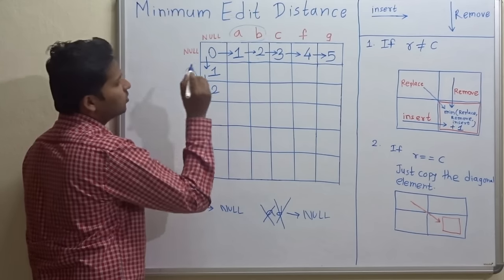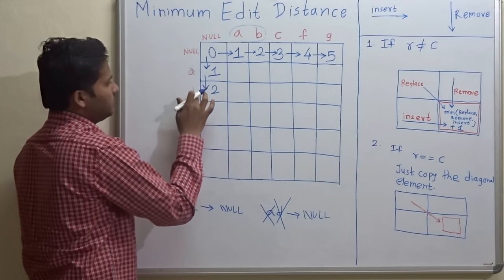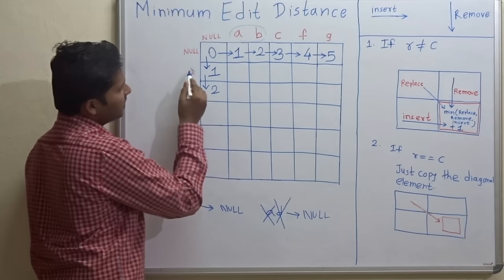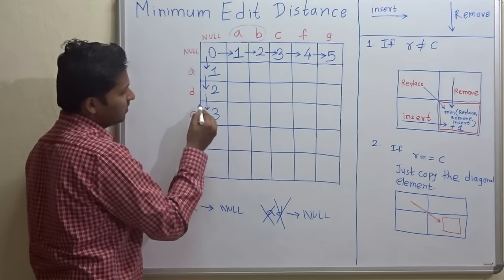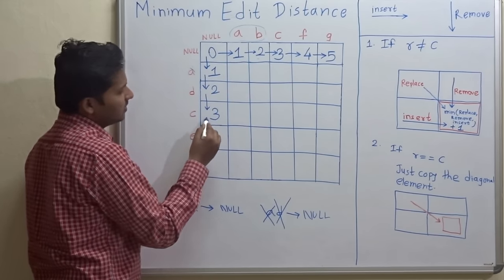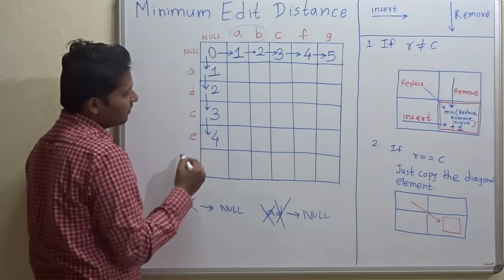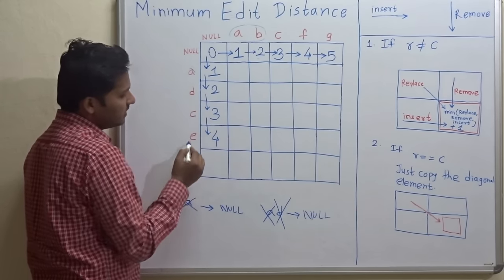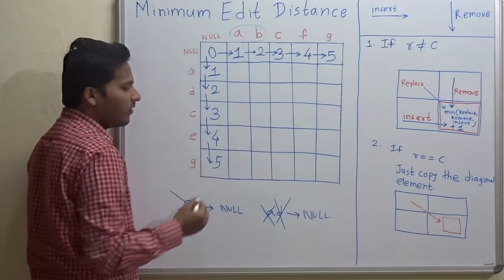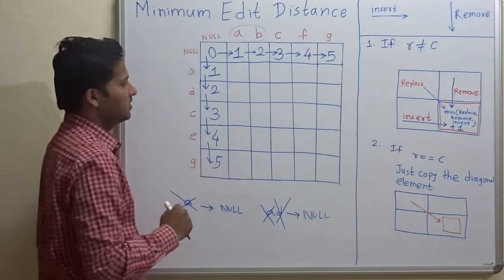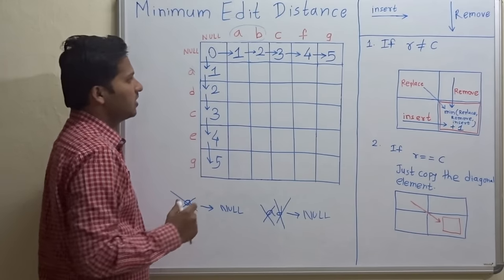If you have string 'ad' and you want to convert it to a null string, obviously you have to remove two characters — 'a' and 'd' — so the number of operations are two. For 'adc', the number of operations are three. For 'adce', the number of operations are four. For 'adceg', the number of operations are five — we have to remove five characters. Yes, we have filled the base condition.